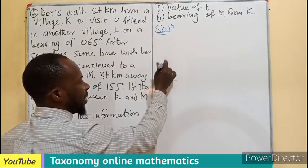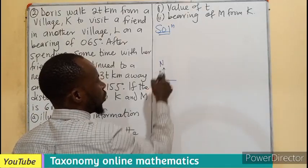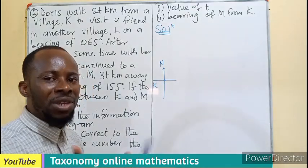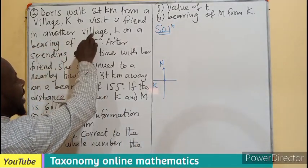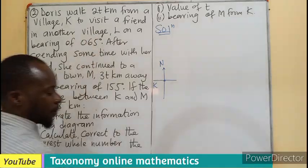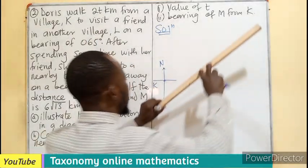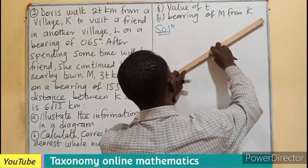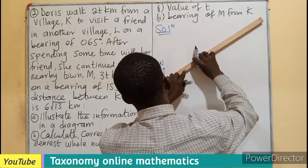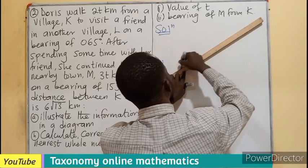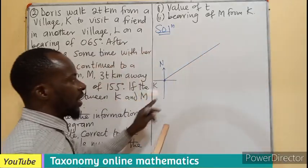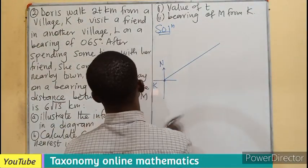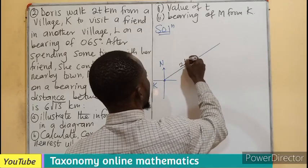So the north of K is here. So we are now going to move from the north and measure an angle of 65 degrees in order to move to the village L. So in that case, let's just say this is the distance which is 2T kilometers.